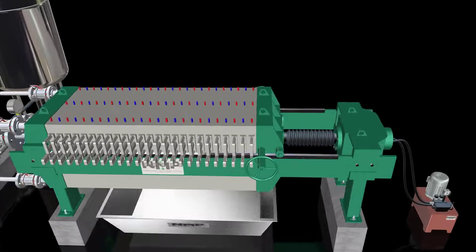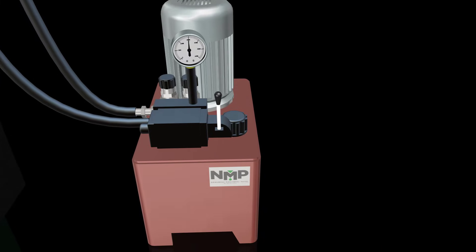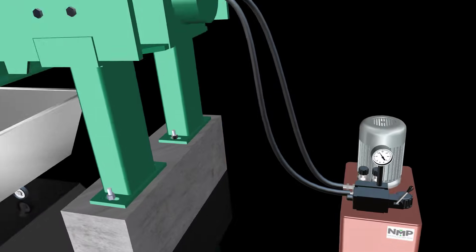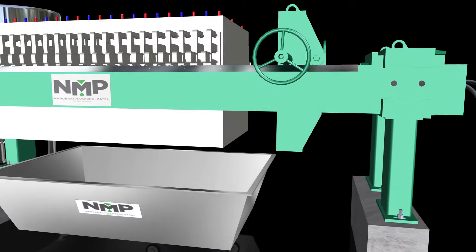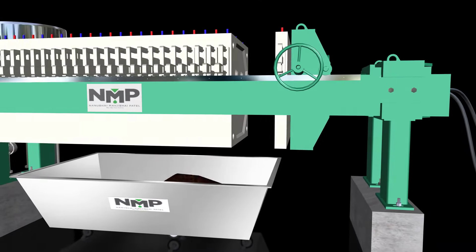Now switch on the motor and pull the lever of direction control valve in reverse direction. The cylinder will start moving to its initial position. When the cylinder reaches its final position, switch the motor off.